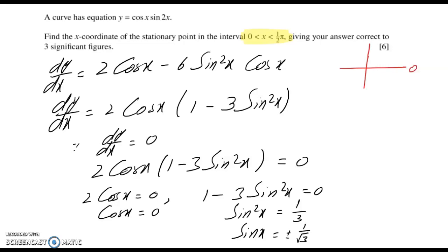For cos x = 0, cos inverse of 0 is π/2, but this is not in our solution because π/2 is not included in the interval. For sin x = ±1/√3, since our domain is the first quadrant, we choose sin x = 1/√3. So x = sin⁻¹(1/√3), which equals 0.615 radians.